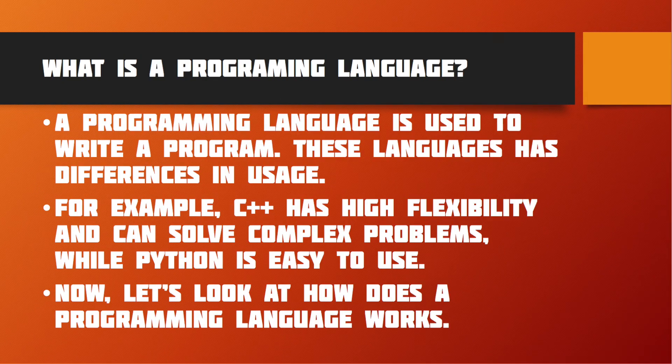What is a programming language? A programming language is used to write a program. This language has differences in usage. For example, C++ has high flexibility and can solve complex problems, while Python is easy to use.